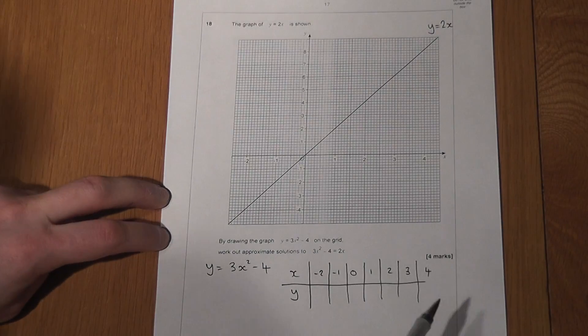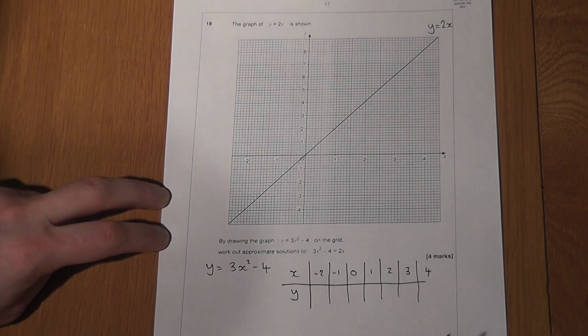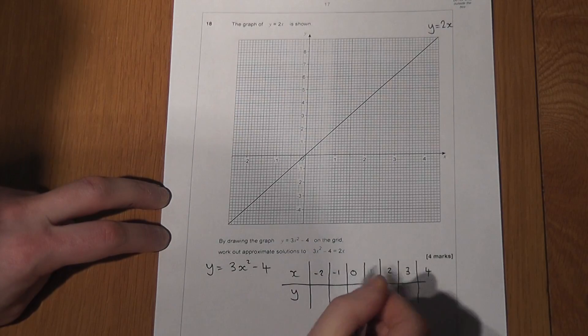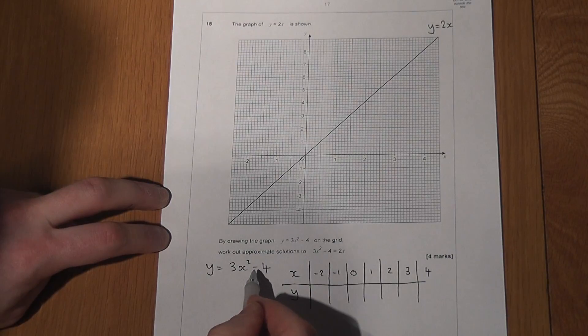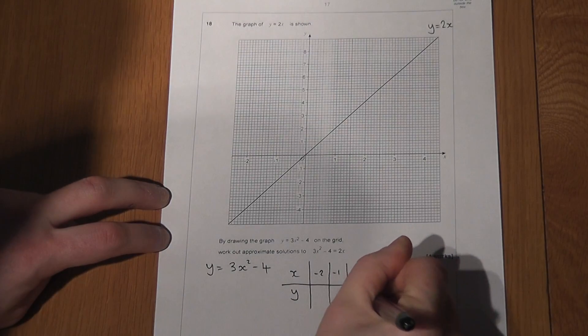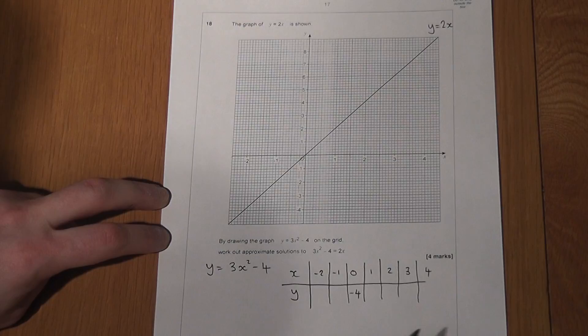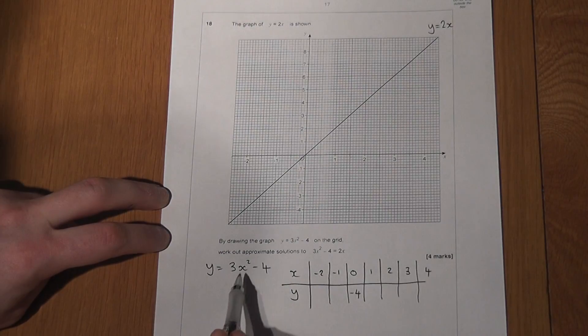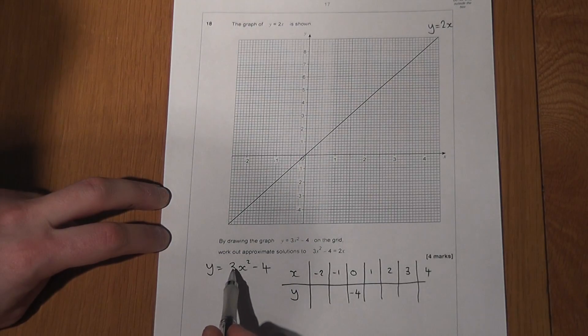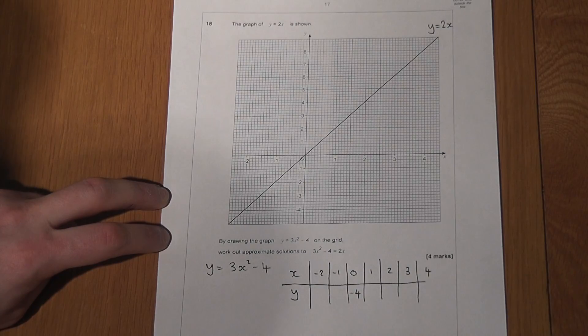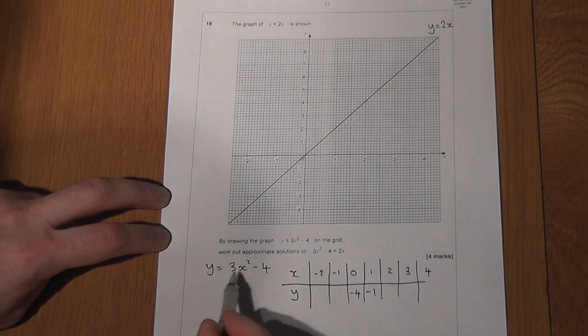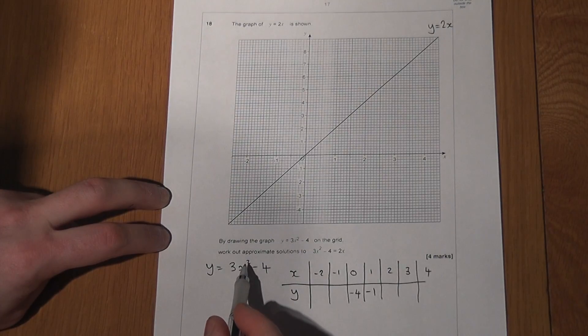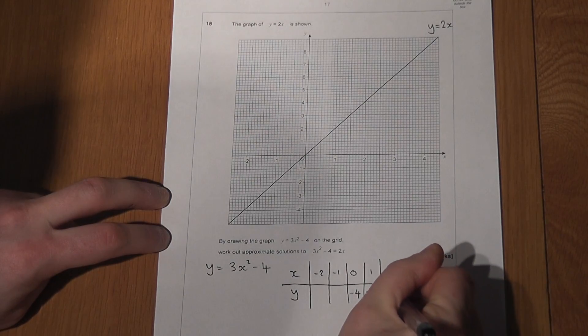I'll do the positives first, because they tend to be a bit easier. So if x is 0, 0 squared is 0, times by 3 is still 0, take away 4, we get minus 4. I'll then work across the table. So if x is 1, 1 squared is 1, times 3 is 3, take away 4 is minus 1. So if x is 2, 2 squared is 4, times 3 is 12, take away 4 is 8.